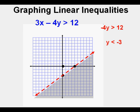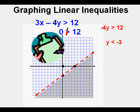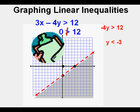I believe in checking because it's easy to make a mistake with a sign. I like picking the point 0, 0 since the math is so easy. Substituting 0 for x and 0 for y gives us 0 is greater than 12. Is 0 greater than 12? No, it's not. So the point 0, 0 is not in the solution set or shaded area, confirming that we shaded below the line correctly. Check.